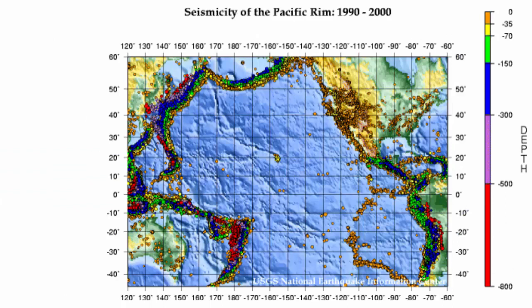Let's look more closely at these earthquakes and color code them by depth. The shallowest earthquakes dominate at divergent plate boundaries and transform plate boundaries. At some plate boundaries, such as this one off of South America, we get three different depth earthquakes in parallel stripes.